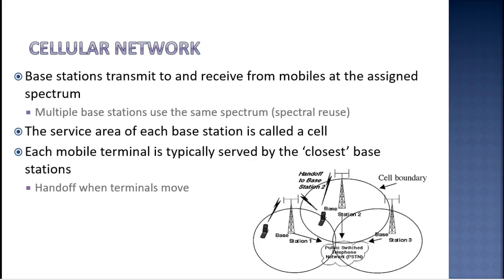A mobile network or a cellular network is made up of a large number of signal areas called cells. I mentioned this word in the last lesson. A cell is the coverage area with one base station. The service area of each base station is called as a cell.